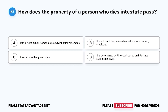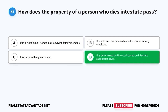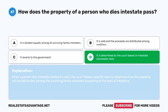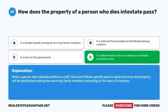Question 67. How does the property of a person who dies intestate pass? A. It is divided equally among all surviving family members. B. It is sold and the proceeds are distributed among creditors. C. It reverts to the government. D. It is determined by the court based on intestate succession laws. The correct answer is D. When a person dies intestate, without a will, the court follows specific laws to determine how the property will be distributed among surviving family members according to the laws of intestacy.